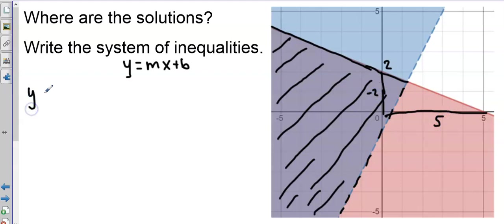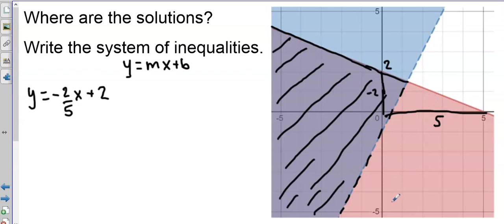I'll start with just the equation of the line and then come back to the inequality sign. I have y = -2/5 x + 2. To determine the inequality sign: I don't want equals because I have shading underneath the line. It's a solid line with shading below, so I'll use less than or equal to — equal to because it's a solid line, and less than because y is by itself and the shading is below.